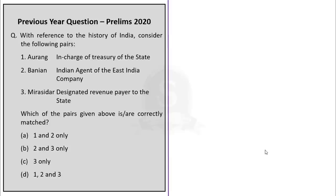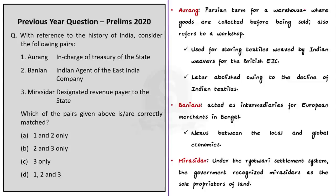Important terms of ancient or medieval India are very important from the prelims perspective. First, let us see what is Aurang. Aurang is a Persian term for warehouse — a place where you store goods before being sold. It also refers to a workshop. Hence, Aurang is wrongly matched. This Aurang was used for storing textiles weaved by Indian weavers for the British East India Company. Some were abolished because of the decline of Indian textiles, mainly due to the development of cotton industries in Britain and heavy duties imposed on Indian textiles.